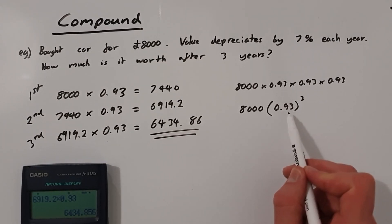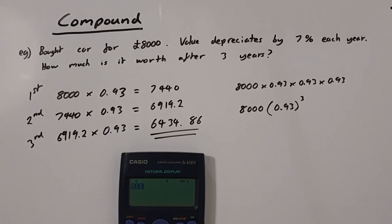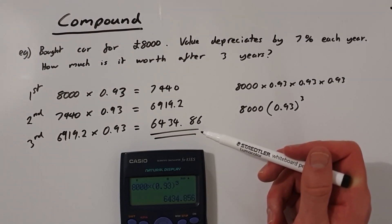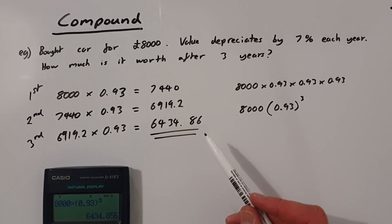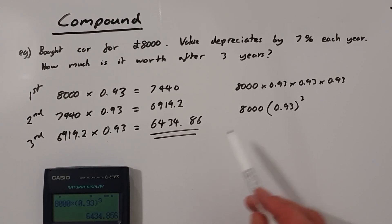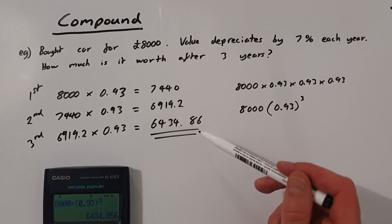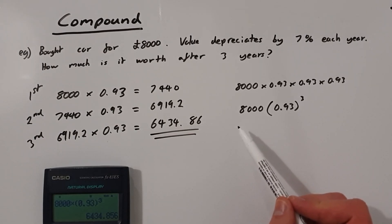That's how we arrive at the equation, and using it gives the exact same answer. So 8,000 multiplied by 0.93 to the power of 3 gives us £6,434.86 — exactly the same. I hope that really clears up what simple and compound interest is. You can use the formula to get the answer straight away, or you can break it down year by year to show yourself what is happening. No matter which method you choose, you can always check your answer by doing the other method, and hopefully you'll get the same answer with both — so you can be confident the answer is correct.